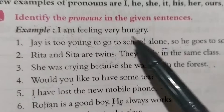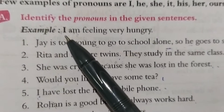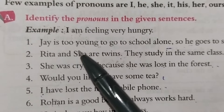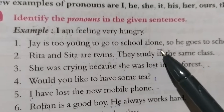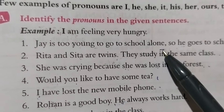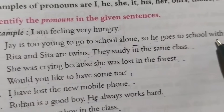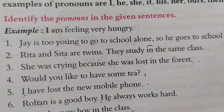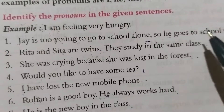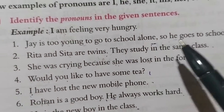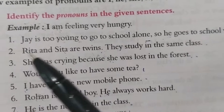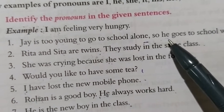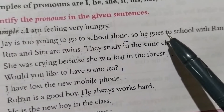Example: 'I am feeling very hungry' — here 'I' is the pronoun. Number one sentence: Jay is too young to go to school alone. He goes to school with someone. So the pronoun here is 'he' — used in place of Jay's name.